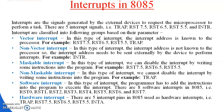Next are software interrupts. In this type of interrupt, the programmer has to include the instructions into the program to execute the interrupt. There are eight software interrupts in the 8085 microprocessor: RST0, RST1, RST2, RST3, RST4, RST5, RST6, and RST7.